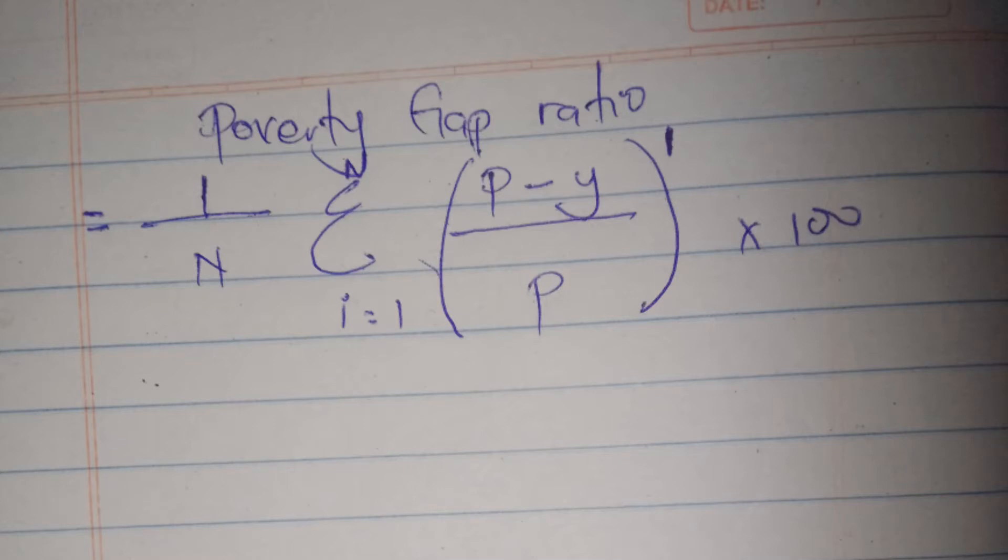The only difference between the head count ratio and the poverty gap ratio is that the head count ratio has power 0 and the poverty gap ratio has power 1. Every number to power 1 is that same number, and every number to power 0 is 1.